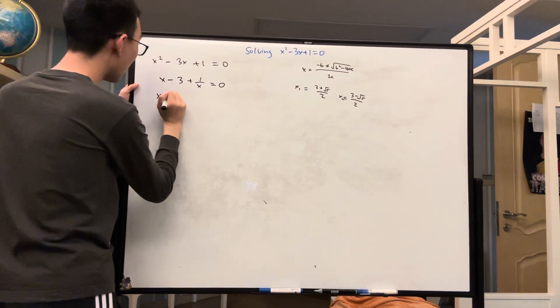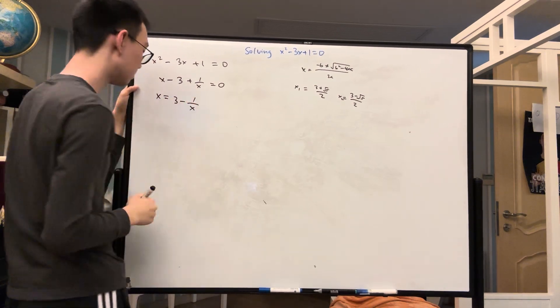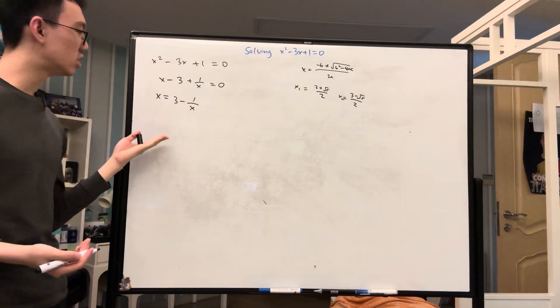Now, we have that x is equal to 3 minus 1 over x. Now, it feels like we're stuck here. What do we do now?